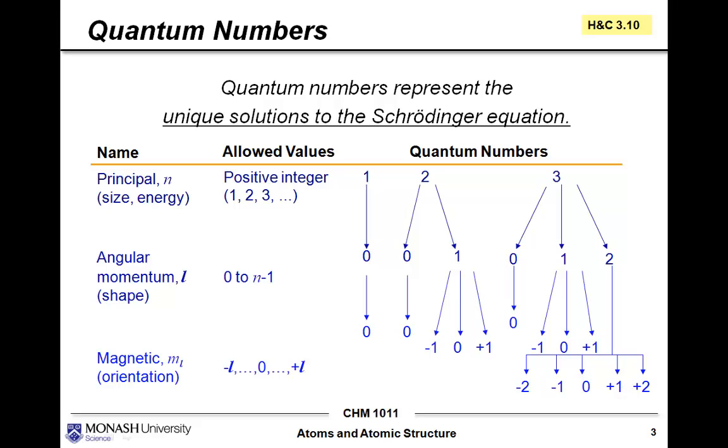Let's have a look at how the values for l and ml can vary depending on what the value for n, the principal quantum number, is. If n has a value of 1, l can only equal 0, and the magnetic quantum number ml can also only equal 0.